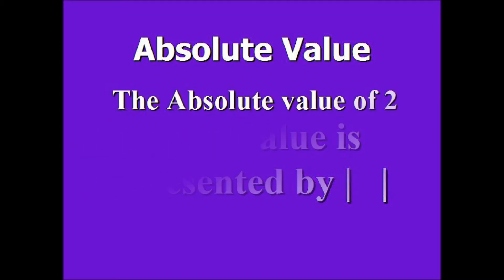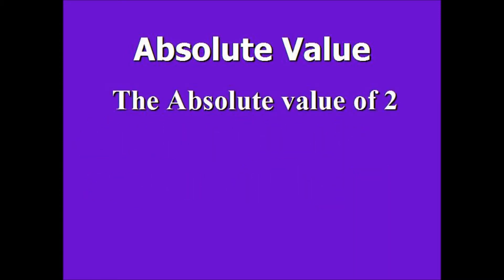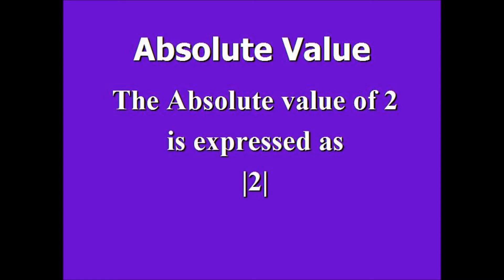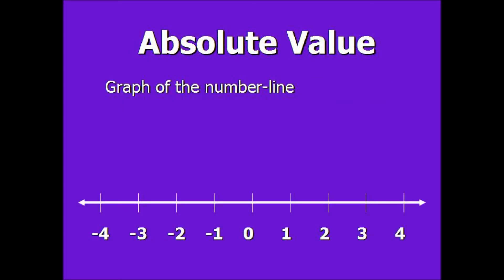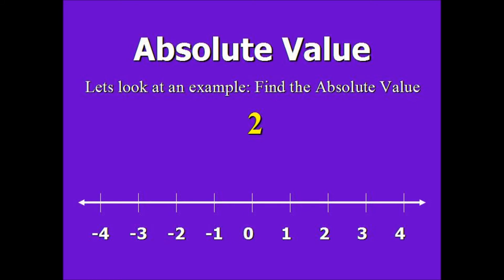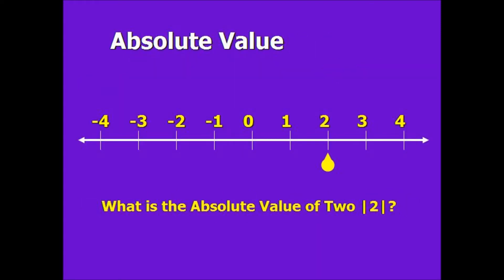Here's our first example. The absolute value of 2 is represented as 2 enclosed in brackets. Here's a graph of the number line. We want to find the absolute value of 2. The brackets mean that we're looking for the absolute value — what is the absolute value of 2, or what distance is the number 2 from zero?